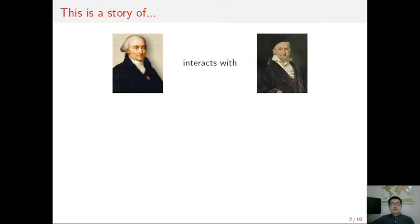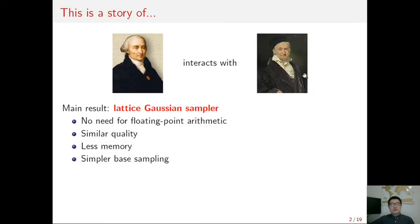This work is about the interaction between the mathematicians Lagrange and Gauss. Our main result is a lattice Gaussian sampler. Compared with previous algorithms, this sampler does not do floating-point arithmetic and achieves similar quality but with less memory and simpler base sampling.